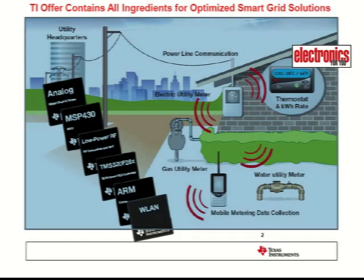This is a standard block diagram of a smart grid system, which can be segregated into four fundamental components. One, meters, which actually constitutes of electricity utility meter, gas utility meter, and water electricity meter. The second component is the communication, which constitutes of power line communication and the LPRF communication.